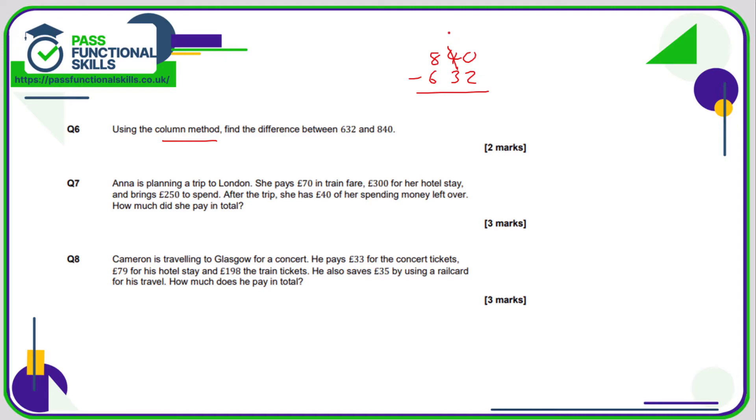So here the four will become a three, and the zero will have a one in front of it to make it a 10. 10 minus two is eight, three minus three is zero, eight minus six is two, so the answer is 208.